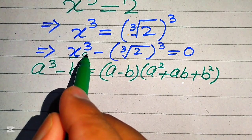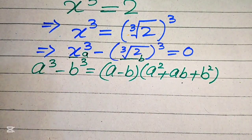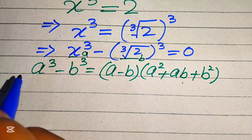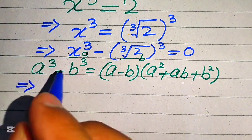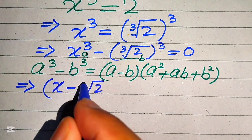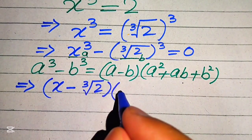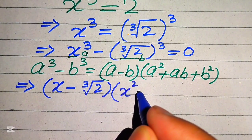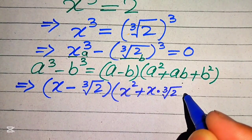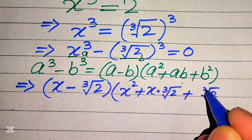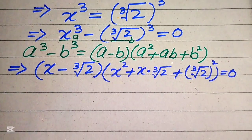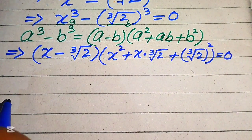Here the base of the first term is called a, and the base of the second term is denoted by b. Applying the formula, we write: a minus b, where a is x and b is cube root of 2, multiplied by a squared — so x squared — plus ab, which is x times cube root of 2, plus b squared, which is cube root of 2 whole squared. This whole equation equals zero.